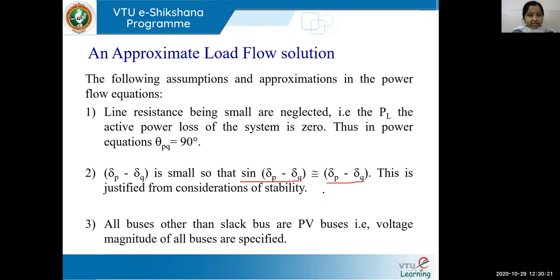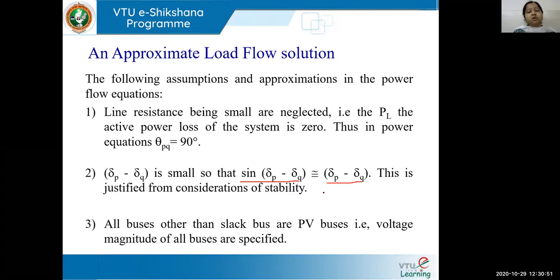Assumption 3: all buses other than the slack bus are considered as PV buses. This means the voltage magnitude at all buses is known to us. So to summarize: we neglect resistance (θPQ = 90°), the angle difference is small, and all non-slack buses are PV buses.